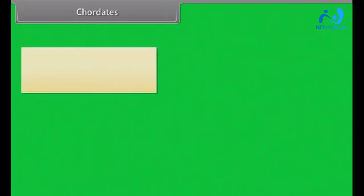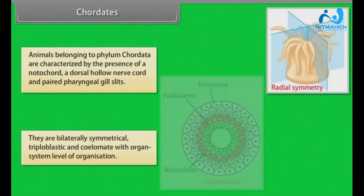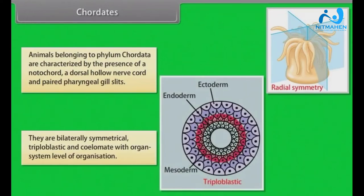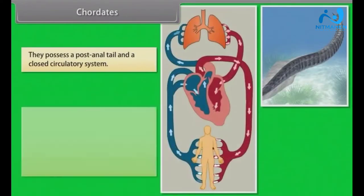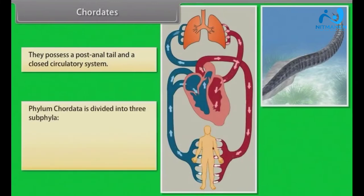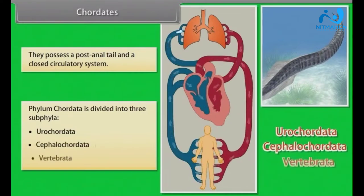Animals belonging to phylum Chordata are characterized by the presence of notochord, a dorsal hollow nerve cord and paired pharyngeal gill slits. They are bilaterally symmetrical, triploblastic and coelomate with organ system level of organization. They possess a post-anal tail and closed circulatory system. Phylum Chordata is divided into three subphyla: Urochordata, Cephalochordata, and Vertebrata.